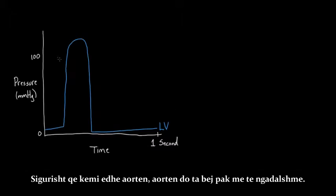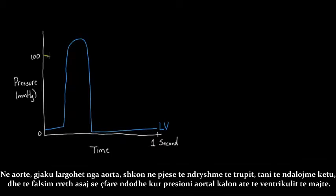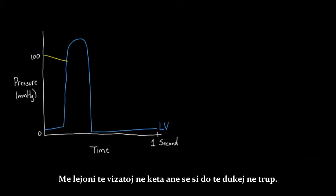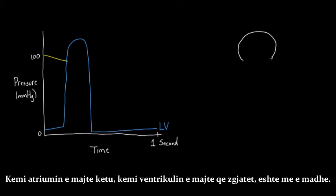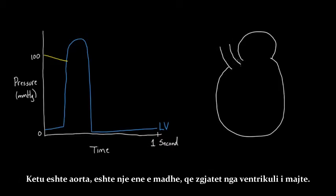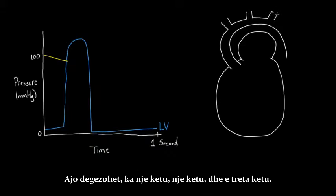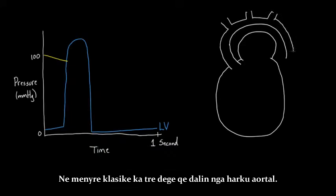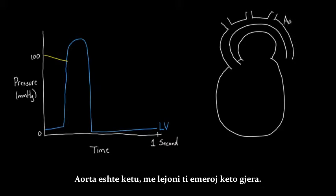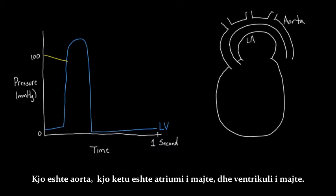Then you have the aorta. I'm going to draw the anatomy a bit more slowly. There's blood leaving the aorta going to different parts of the body. Let me draw what this looks like in the body: you've got the left atrium, then the left ventricle — which is enormous — and the aorta, also a large vessel, coming off of the left ventricle. The aorta wraps around and goes down, leaving a few branches. Classically there are three branches coming off the arch of the aorta.